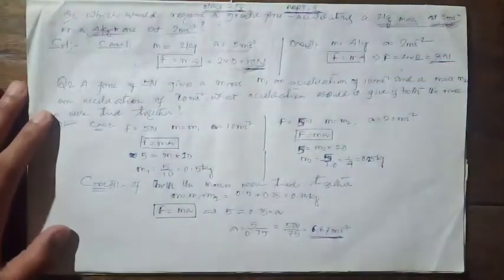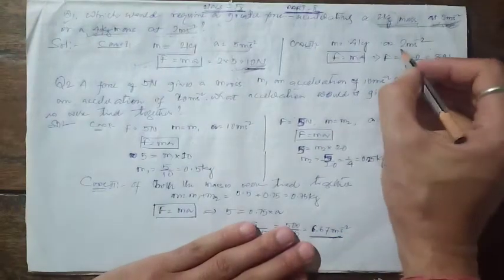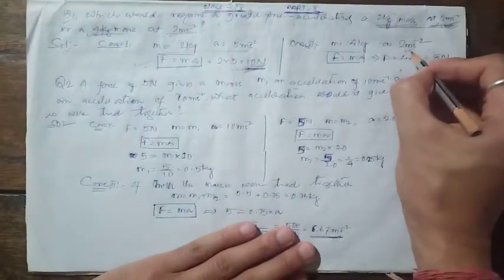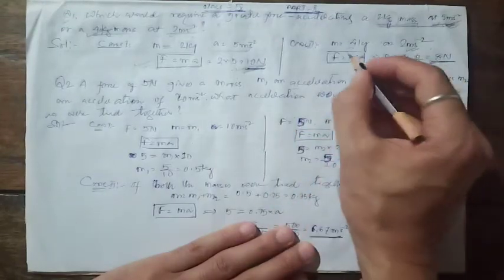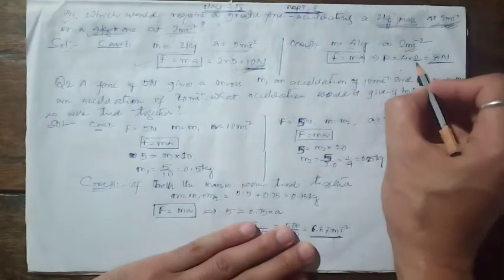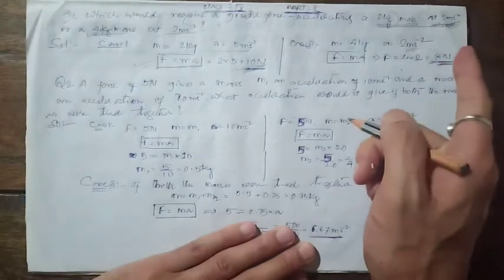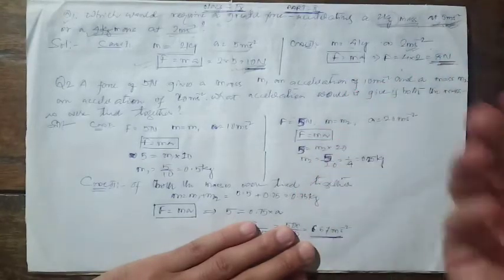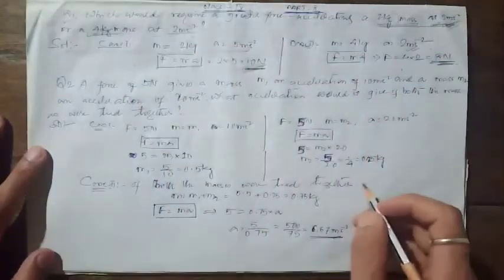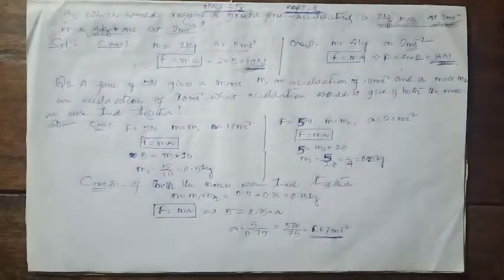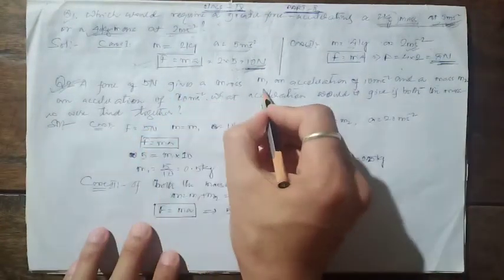In the second case, to give 2 m/s² acceleration to a 4 kg mass, force = mass × acceleration = 4 × 2 = 8 newton. So in the second case we have to apply less force. That's problem number one.